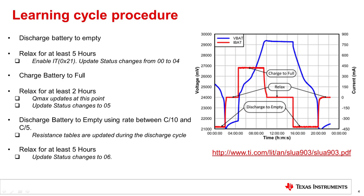After this, completely discharge the battery to empty using a rate between C/10 and C/5. Resistance tables are updated during this discharge. Then relax for at least 5 hours — the update status changes to 06. More details can be found in the link shown.